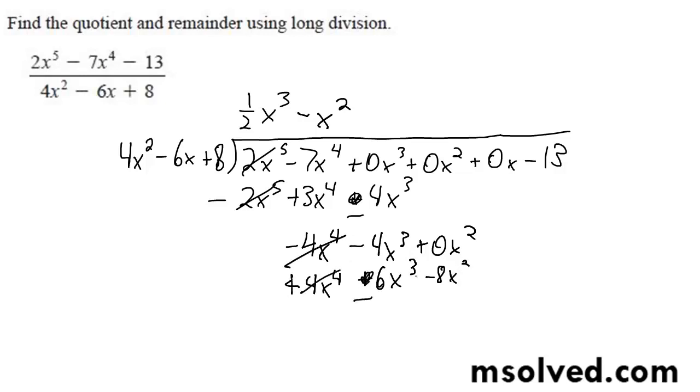And 4x to the 4th plus 6x to the 3rd minus 8x to the 2nd. So, minus 20x, so switch sides, plus. We're going to end up with 7x squared. Minus 20x, minus 13.